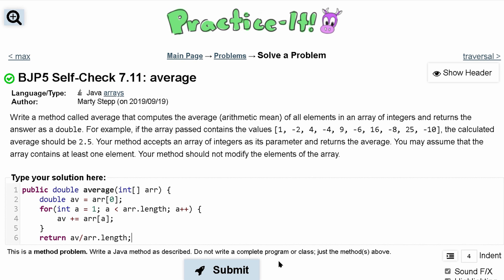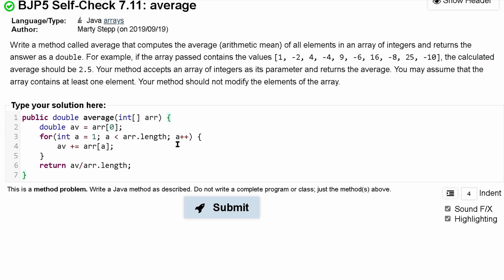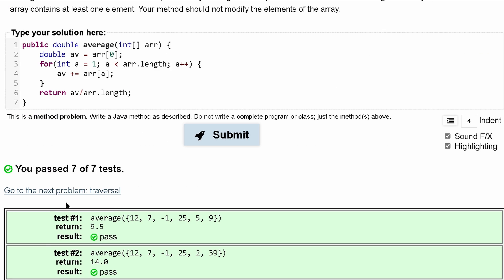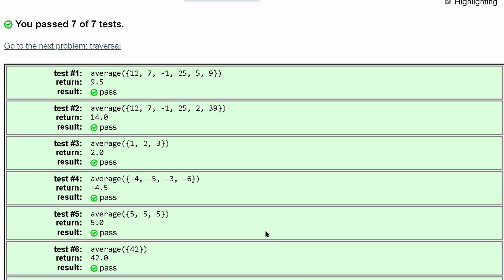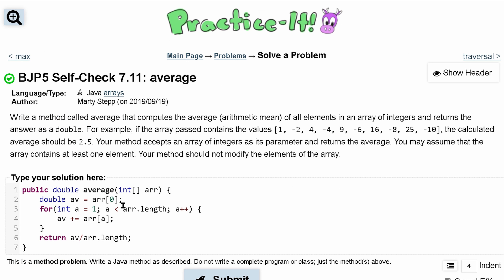We just take whatever value we have, divide it by the array length, and that should be it. We can close this method, press submit, and we've passed seven out of seven tests. That's how I would approach this problem, the code for self check 7.11 average.